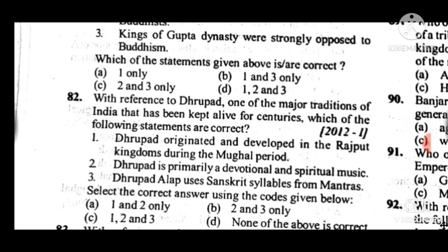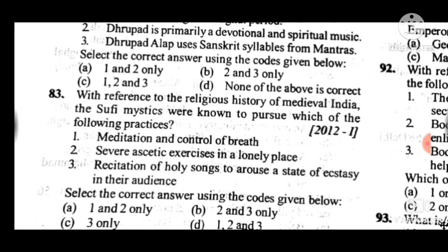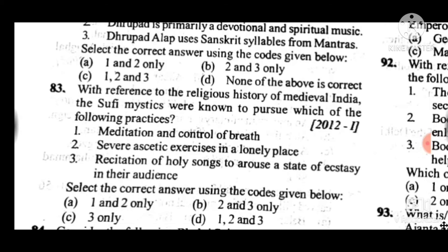Question 82: With reference to Dhrupad, one of the major traditions of India that has been kept alive for centuries — which of the following statements are correct? Answer to question 82 is B: statements 2 and 3 are correct. Question 83: With reference to the religious history of medieval India, the Sufi mystics were known to pursue which of the following practices? Answer to question 83 is D: 1, 2 and 3 — all statements relating to Sufi mystics were true.